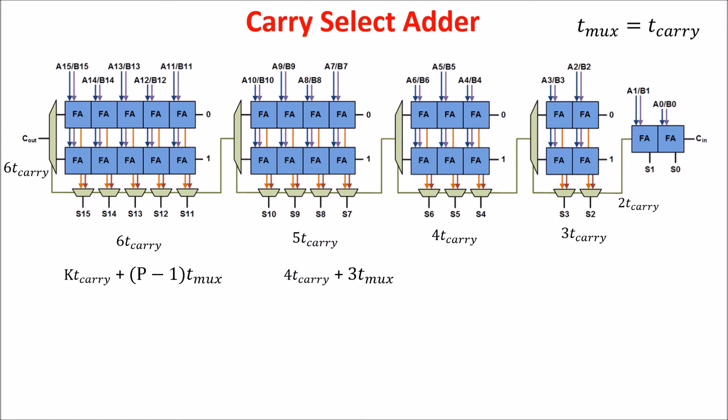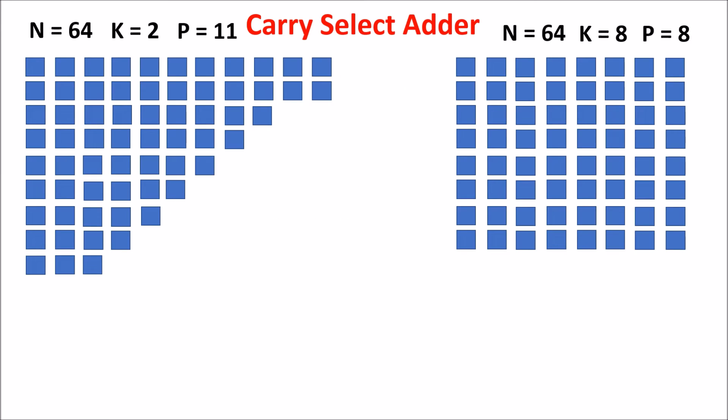For example, in the 64-bit case, we can design the full adders and the blocks in two ways. On the right, we have blocks of equal size, so the delay is given by this formula, and in the current case of 64 bits, the delay is this.